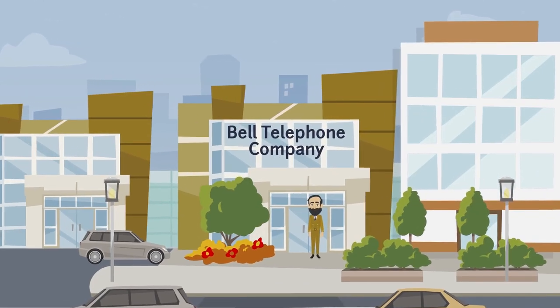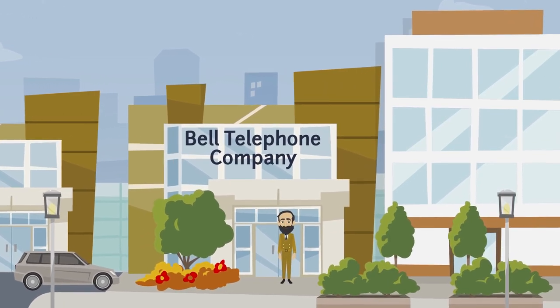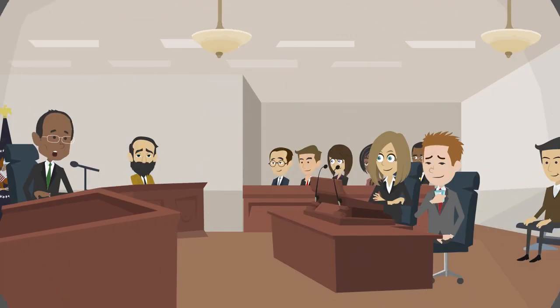After the successful development of the telephone, Graham established the Bell Telephone Company in 1877. However, Graham got involved in a serious legal battle with other investors, Antonio Meucci and most especially, Elisha Gray.